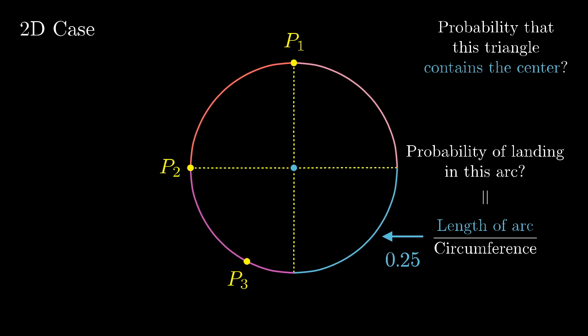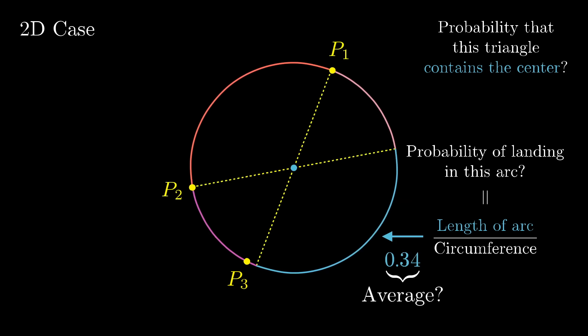So think about this for a moment. p1 and p2 are chosen randomly, with every point on the circle being equally likely. So what is the average size of this relevant arc? Maybe you imagine fixing p1 in place, and just considering all the places that p2 might be. All of the possible angles between these two lines, every angle from zero degrees up to 180 degrees, is equally likely.